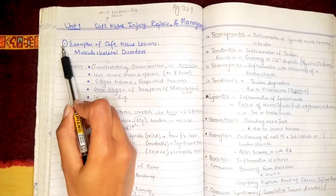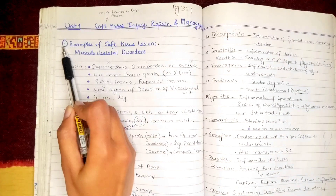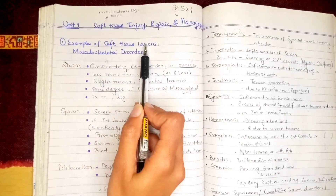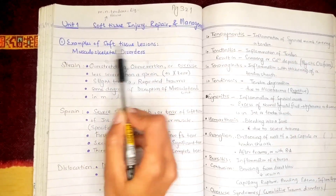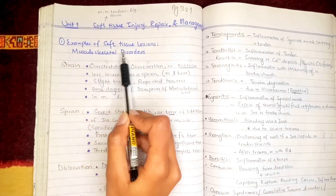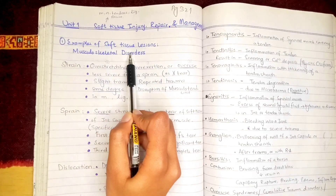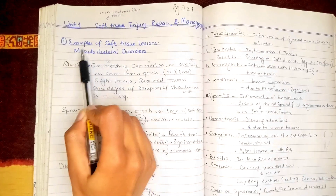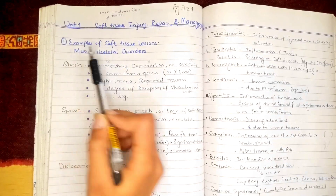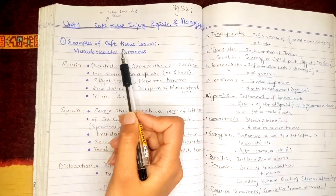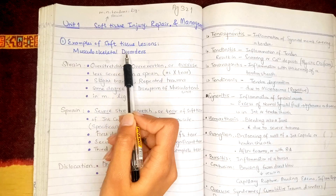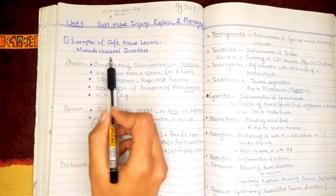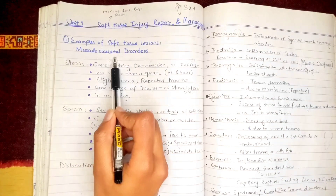The first topic will cover examples of soft tissue lesions, in which we will discuss about musculoskeletal disorders. As you know from this term, musculoskeletal means muscles and skeleton, so we are going to discuss about the disorders of the muscles and skeleton.